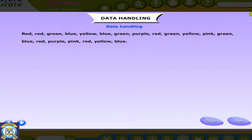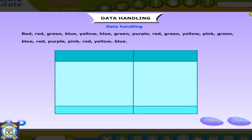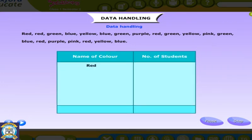So we have seen how sometimes data or information cannot give all details unless we arrange them in the form of a list or table. This arrangement of data in the form of a list or table is called data handling.